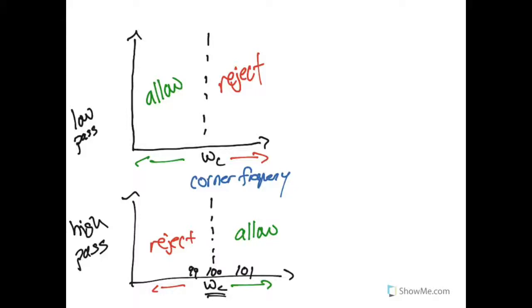In addition to our two basic low-pass and high-pass filter types, we can also have more complex designs that are called band pass and band reject.